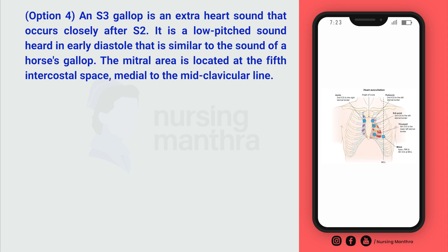So we selected the option murmurs. Murmurs indicate turbulent blood flow across diseased or malformed cardiac valves. They are often described as musical, blowing, or swooshing sounds that occur between normal heart sounds. They may be auscultated at the aortic, pulmonic, tricuspid, or mitral areas.